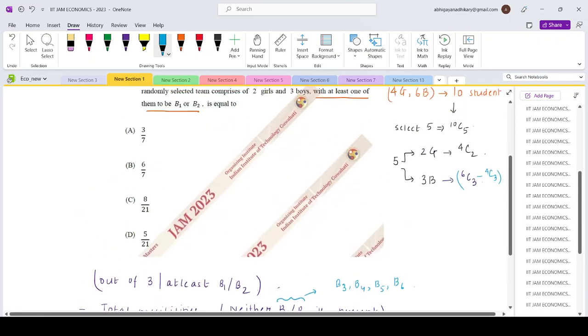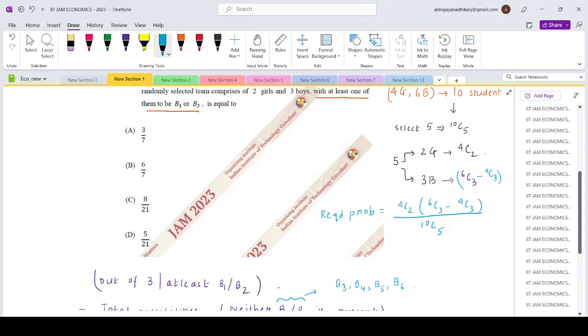So the required probability would be 4C2 into 6C3 minus 4C3 divided by 10C5. If you simplify this, you will be getting the answer as 8 by 21, which is option D.